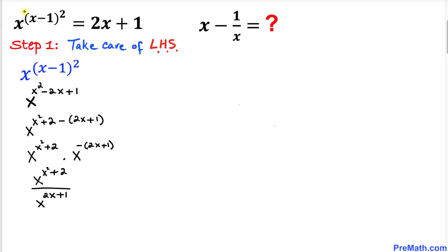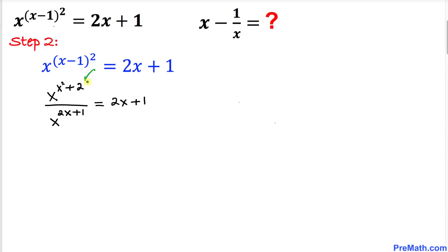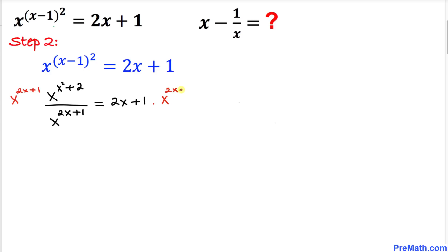We can see that our left hand side has been transformed into this form. So we replace the left hand side with this, and now our equation has this new left hand side while the right hand side remains exactly 2x plus 1. Let's remove the fraction by multiplying both sides by x power (2x plus 1).